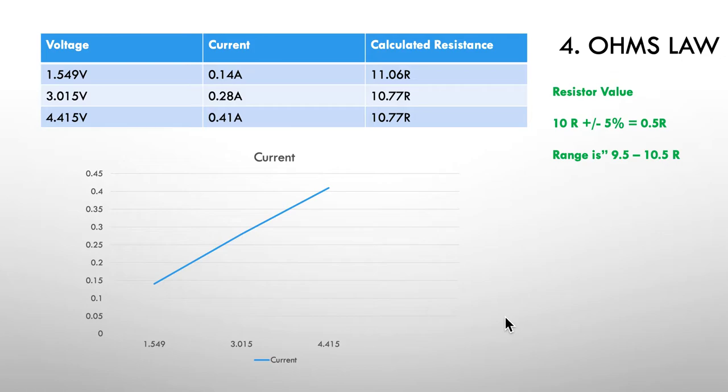All I've done now is tabulate the results that we got and put them in this table. Over here we have our voltages, our currents, and our resistance. The resistance is very consistent.